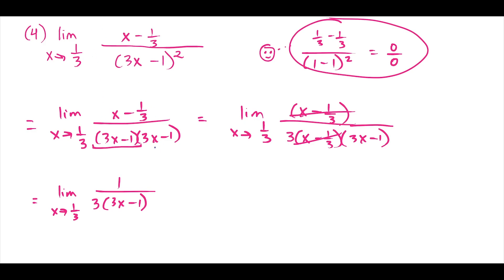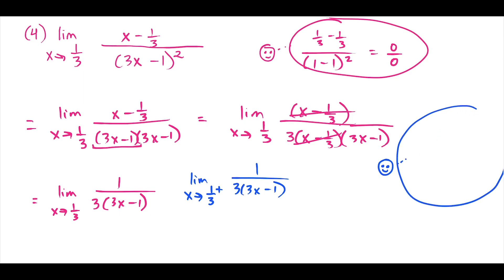Plugging in 1/3 gives 1 over 0, which hints the limit doesn't exist. To confirm, we investigate the one-sided limits. For the right-side limit, we plug in a number slightly bigger than 1/3. Then 3 times that number is slightly bigger than 1, and subtracting 1 gives a tiny positive number. So we have 1 over 0 plus, which heads toward positive infinity.